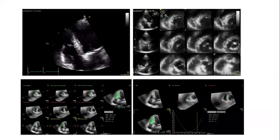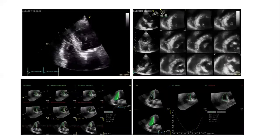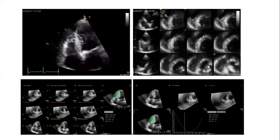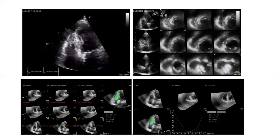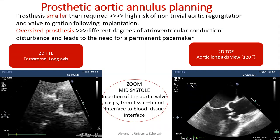Do not forget to assess RV ejection fraction using a 3D echo-enabled machine or dedicated software. It is important to assess the prosthetic aortic annulus for patients going for SAVR or TAVR. In TAVR, undersized prosthesis leads to significant aortic regurgitation and valve embolization. Undersizing also raises risk of patient-prosthesis mismatch in SAVR patients. Conversely, oversized prosthesis in TAVR or SAVR is associated with higher incidence of AV conduction disturbances and need for permanent pacemaker implantation.